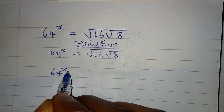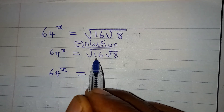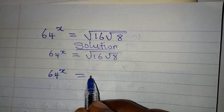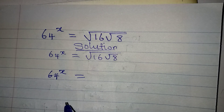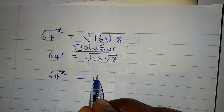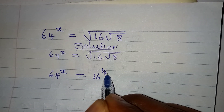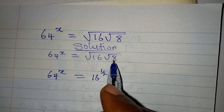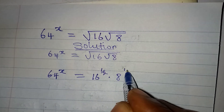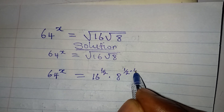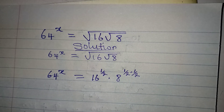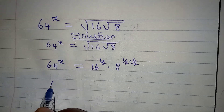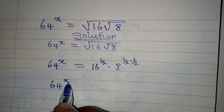We have 64 to the power of x equal to: 16 is under one square root sign, so we write 16 to the power of 1 over 2, then multiplied by 8. Here 8 is under two square root signs, so we have 8 to the power of 1 over 2 times 1 over 2, because of the two square root signs.